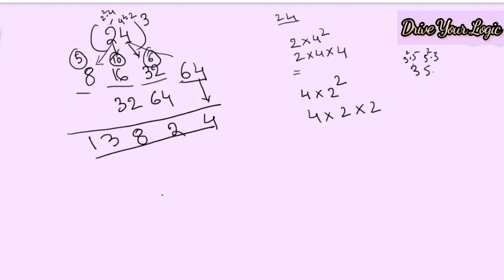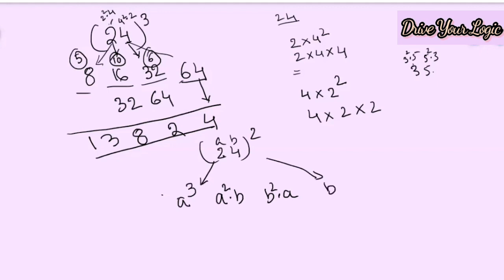It's a very easy process — just keep practicing. The formula to remember is: a cube, a squared b, b squared a, b cube — and you double the middle two parts. While writing the answer, take only one digit and carry forward the rest to the previous position.